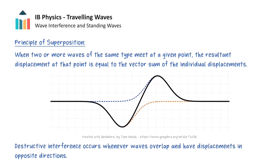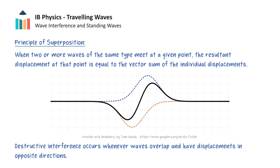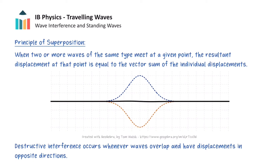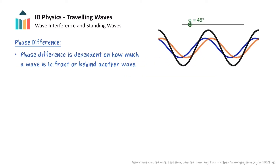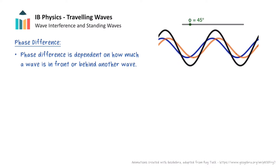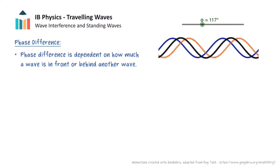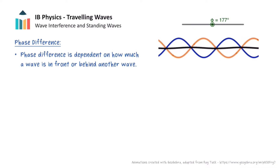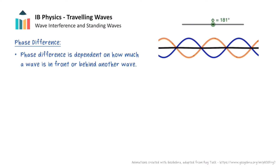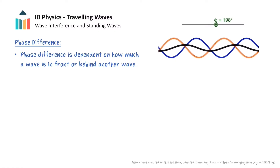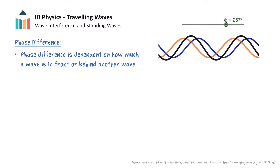We will now explore the conditions required for constructive or destructive interference to occur. One of the conditions is known as phase difference, which is dependent on how much a wave is in front or behind another wave, and is measured in degrees. In this animation, the black wave shows the resultant wave of the blue and orange waves interfering as a result of the principle of superposition. When the phase difference between the blue and orange waves is varied, we can see that the amplitude of the black resultant wave also varies.